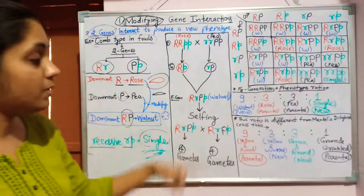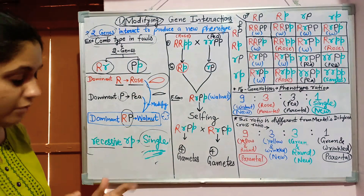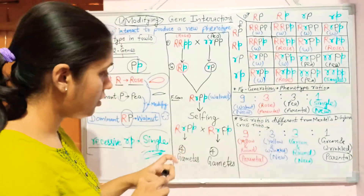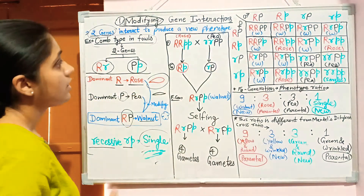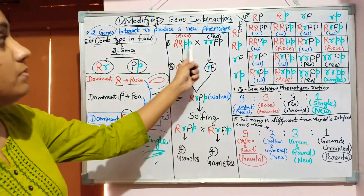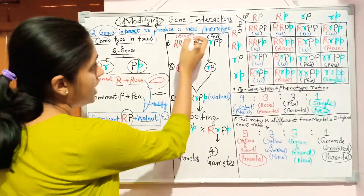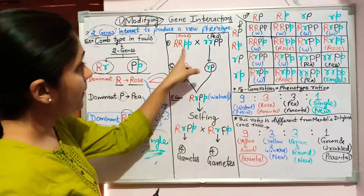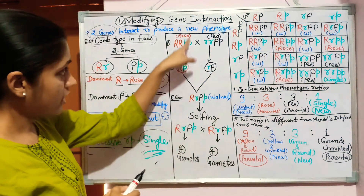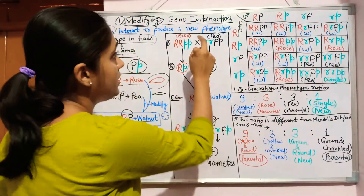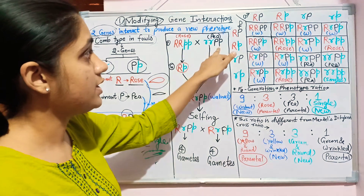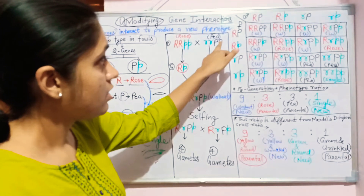This is known as modified gene interaction because the phenotype is modified from rose and pea type to the walnut type, which is completely different from the parents. If we look at the cross, we take two parents, both must be homozygous. The first parent has the rose type comb and the second has the pea type comb. The rose type comb has the capital P allele absent, and the pea type comb is produced because capital R is absent. So both dominant alleles are not present in one parent — one parent has capital R for rose type, the other has capital P for pea type.